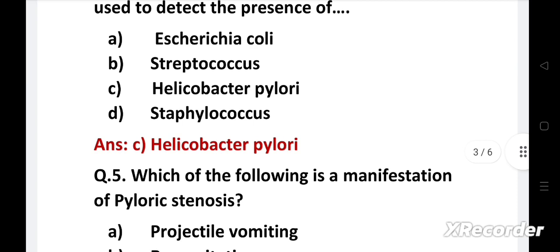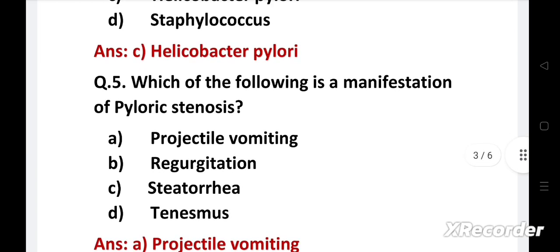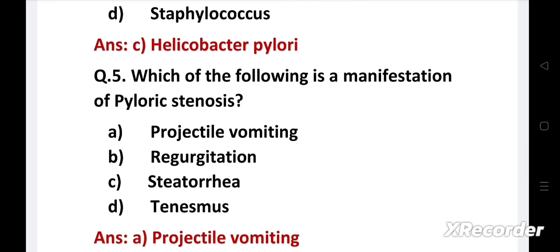Next question: Which of the following is a manifestation of pyloric stenosis? Option A - Projectile vomiting, B - Regurgitation, C - Eschator here, D - Tenesmus. Right answer is Option A - Projectile vomiting. Pyloric stenosis is defined as narrowing of the outlet of the stomach so that food cannot pass easily from it into the duodenum, resulting in feeding problems and projectile vomiting.